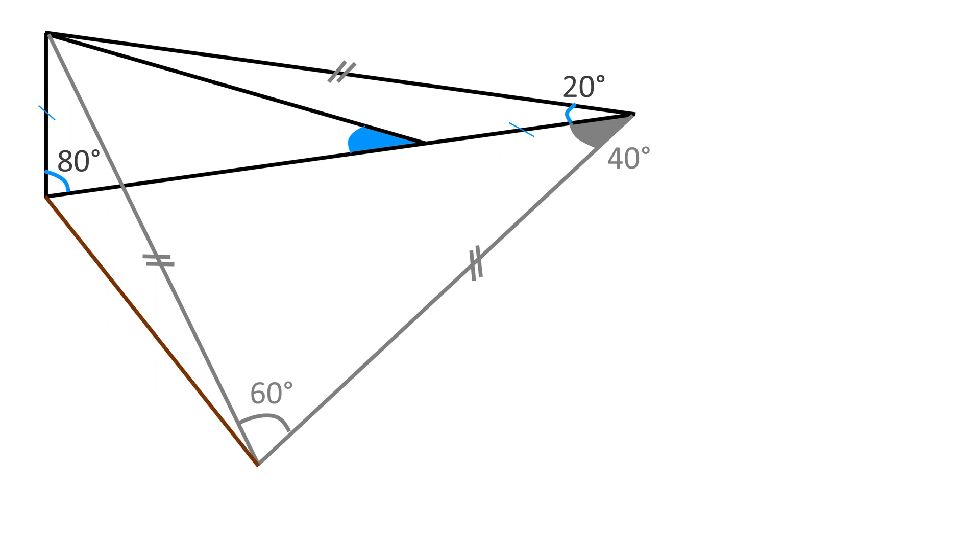Now we draw a line here. Recall earlier, we have an isosceles triangle, which means these two green lines are of the same length. They are also the same length as the two other sides of the equilateral triangle, which are in gray.